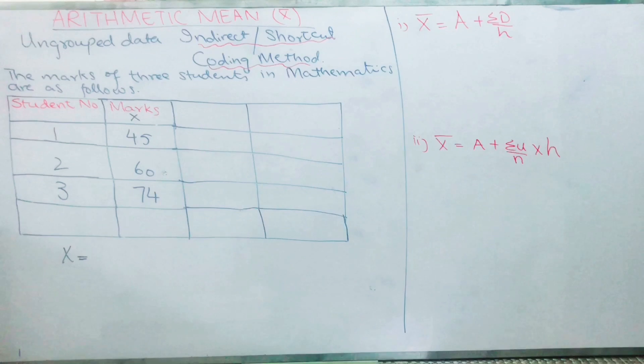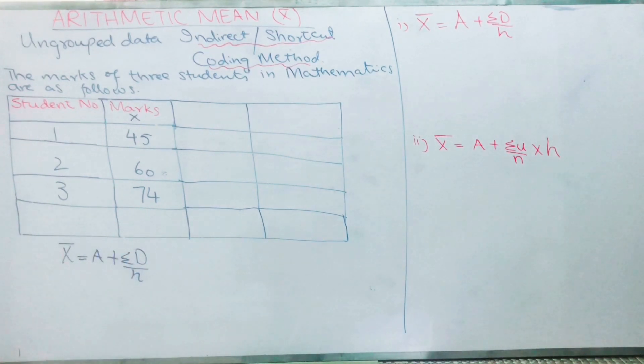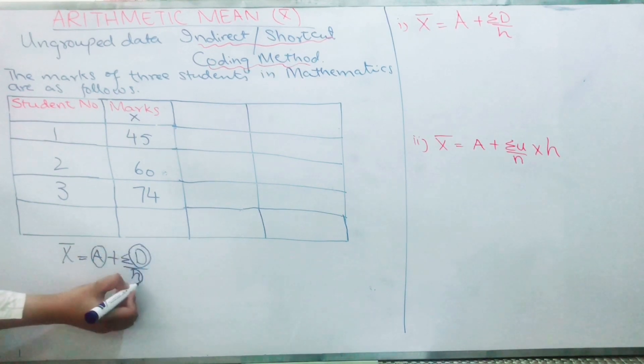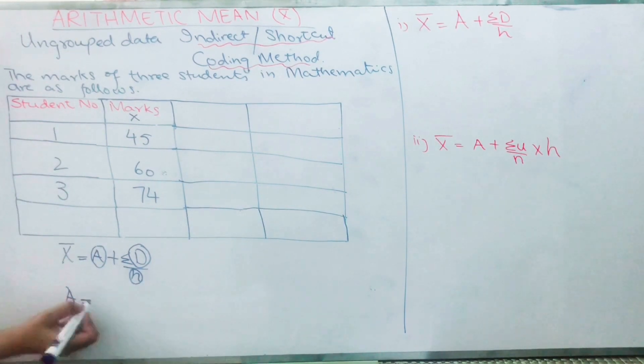So A can be any assumed value. Most of the time we take the middle value as A. So my formula is x̄ = A + ΣD/n. I am writing it here so that it will be easier. First I should know A, then D, and then n. Three things. So A is mostly the middle value. Here A = 60.